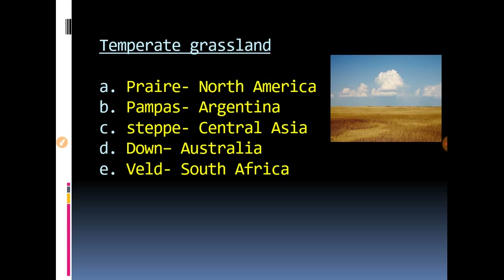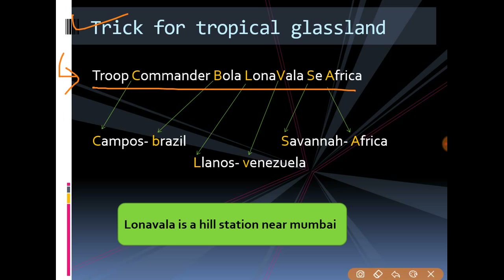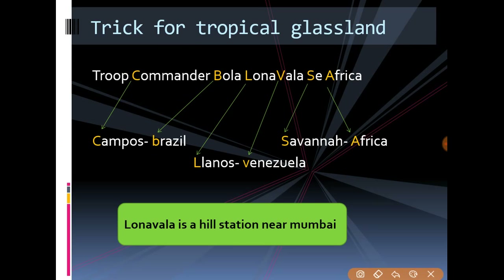To remember the tropical grasslands easily, use this mnemonic: 'Troop commander bola Lonavala se Africa.' The word 'Troop' denotes tropical grassland so you don't get confused with the temperate trick. 'C' from 'commander' is for Campos and 'B' from 'bola' is for Brazil — and Campos is found in Brazil.